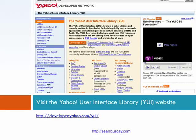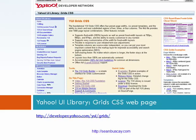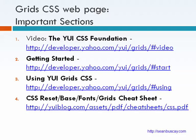Visit the Yahoo User Interface Library website at developer.yahoo.com/YUI. Also take a look at the YUI Library Grid CSS web page at developer.yahoo.com/YUI/grids. While on the Grid CSS web page, take a look at the following four important sections: a video overview of the YUI Library, a Getting Started section with illustrated examples of using the YUI Grid templates, a section titled Using YUI Grid CSS, and finally a CSS Reset Base Fonts Grids Cheat Sheet which provides information on selectors and properties for the CSS files.